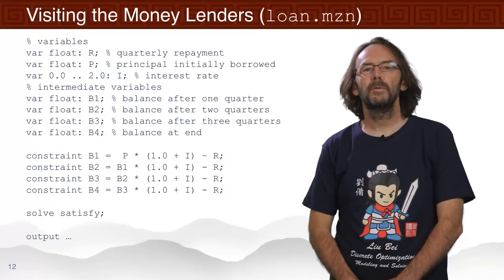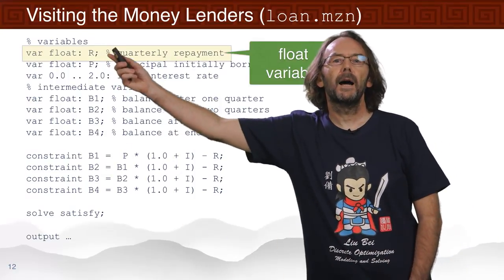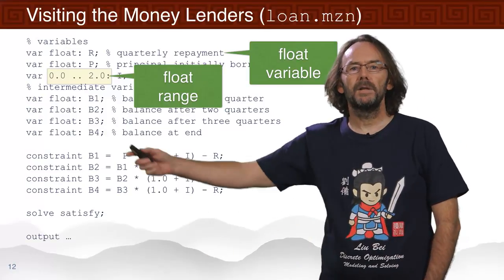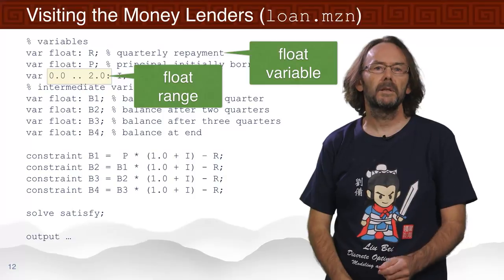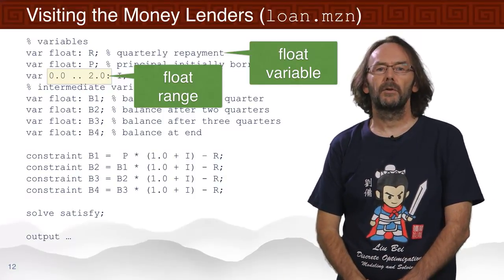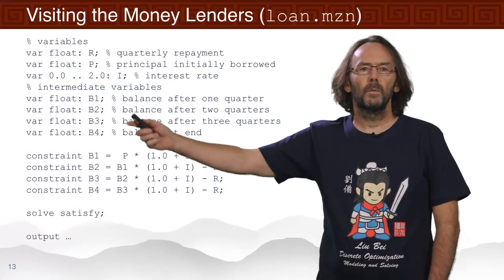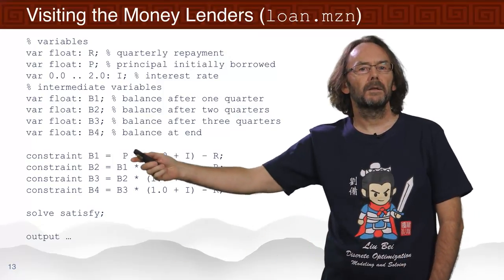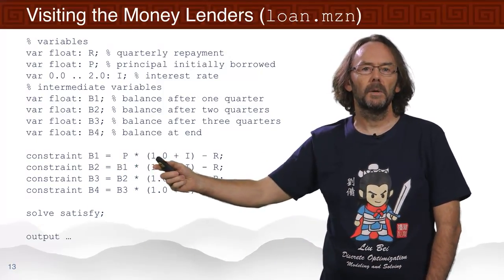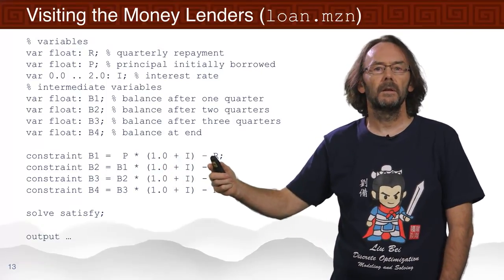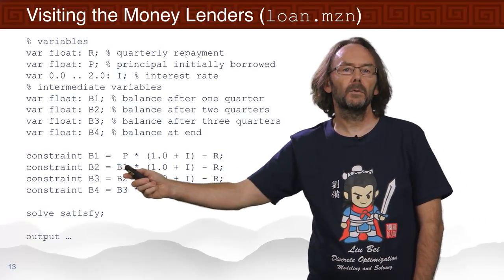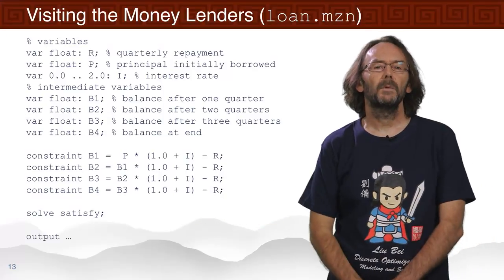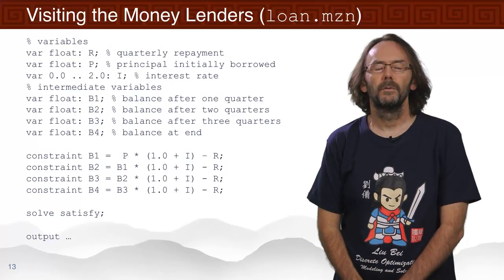Here's our loan model with some new features. We have a float variable 'var float R' defining the repayment amount, which is unknown. We also have a float range from 0.0 to 2.0 for the interest rate, representing 0% to 200%. The model has decisions for repayment, principal, and balances after each quarter, with constraints relating them. The balance after the first quarter equals the principal multiplied by (1 plus the interest rate), minus the repayment — and similarly for each subsequent quarter. We ask to find a solution with a detailed output function.